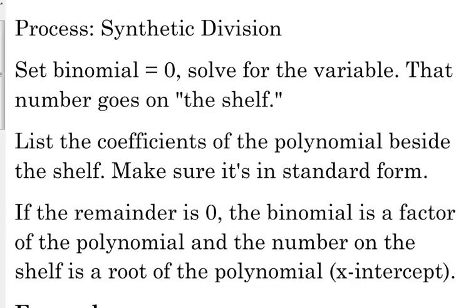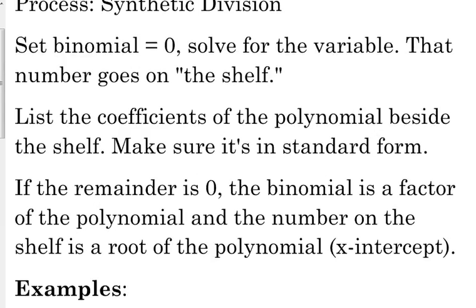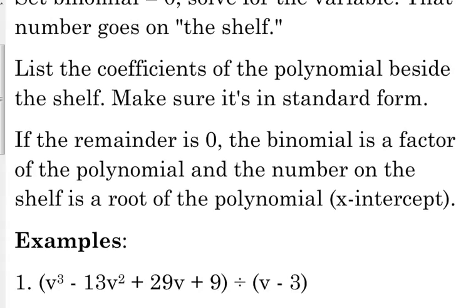When we finish this process, if the remainder is zero, because we're dividing, we could have a remainder, the binomial is a factor of that polynomial. So that means if we could factor that polynomial, that binomial would be part of the factoring. And the number on the shelf is a root of the polynomial. Remember we said roots, zeros, solutions, x-intercepts, they all mean the same thing. So if we graph that polynomial, then it would cross the x-axis at that number that's on the shelf. So, like I said, you'll see what I mean here in a minute after we do an example.